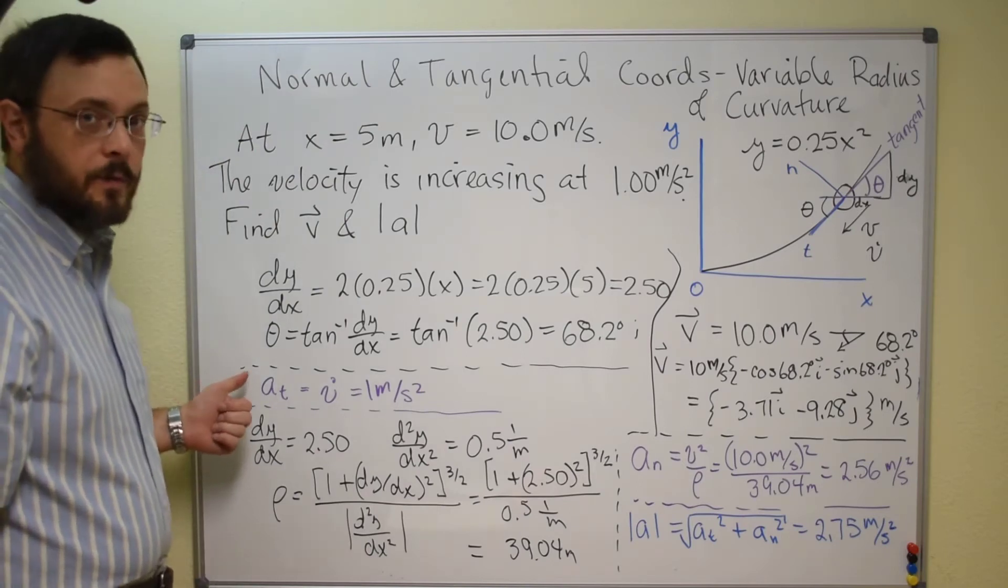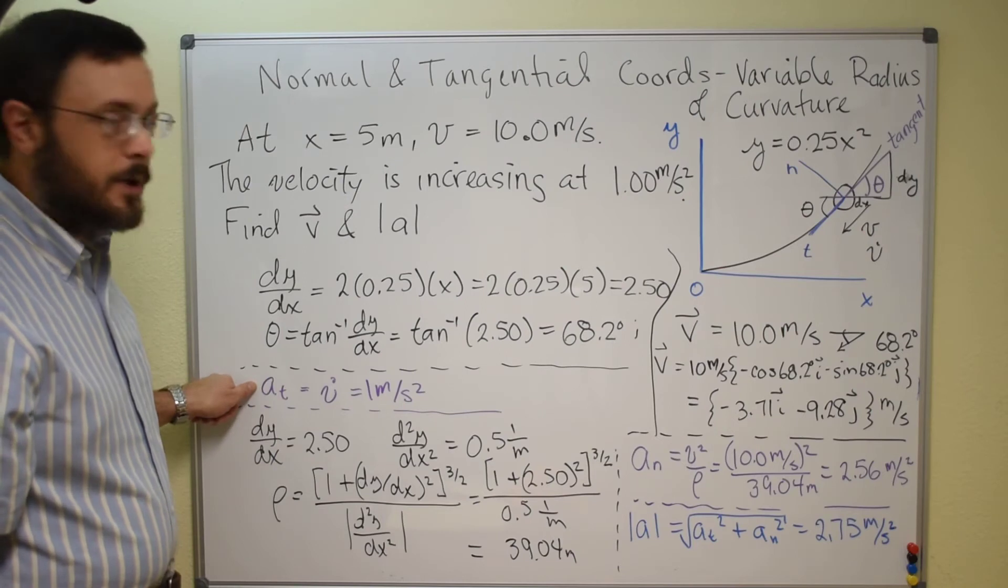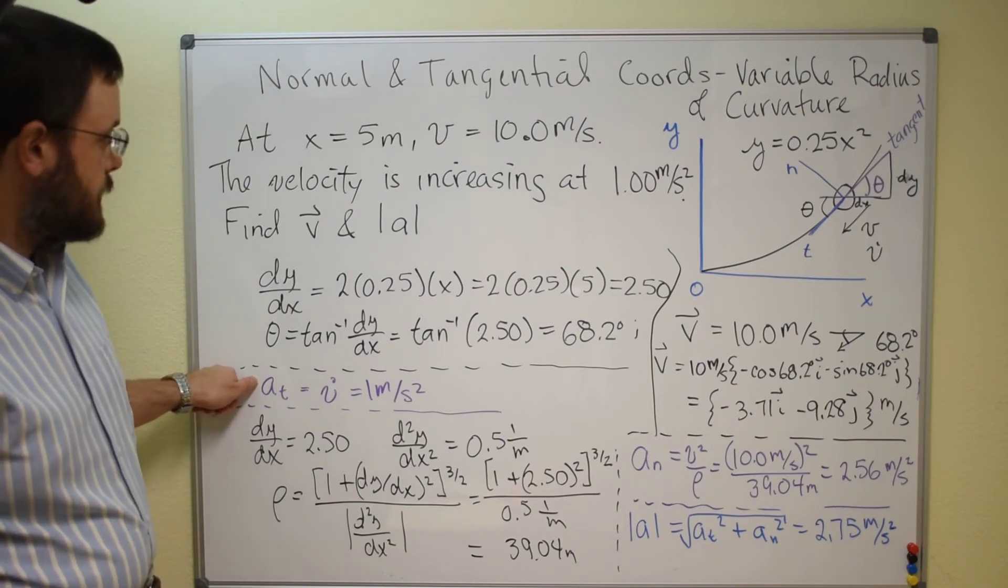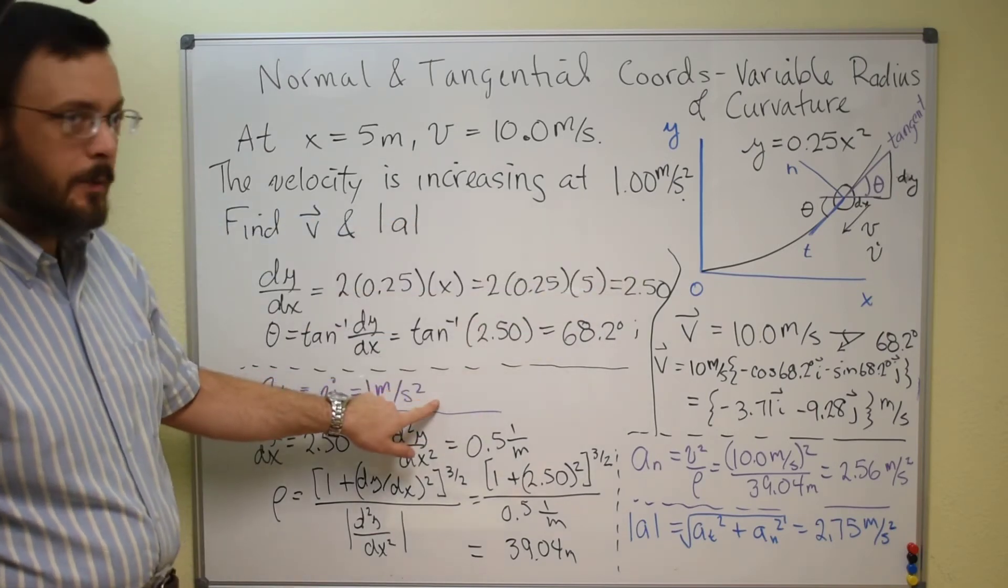To do our acceleration we need normal and tangential coordinate components, so we have our tangential, it's just the rate of change of the velocity, so at is the 1 meter per second squared that we were given in the problem statement.